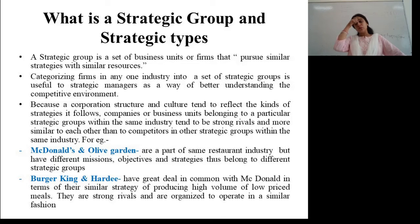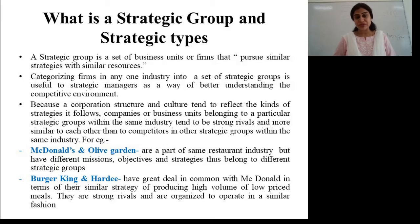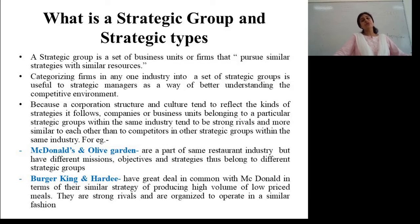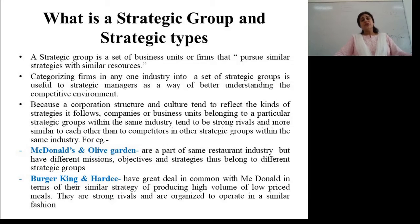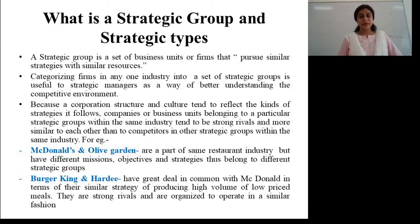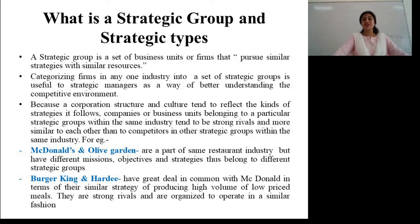Then we will talk about strategic groups — the various kinds of strategic groups and strategic types being used by companies. The strategic group is a set of business units or firms that pursue similar strategies with similar resources. We categorize firms in one industry into a set of strategic groups that can be utilized by strategic management to understand the competitive environment of that particular group. For example, McDonald's and Olive Garden are part of the same restaurant industry but have different missions, objectives, and strategies, thus they belong to different strategic groups.